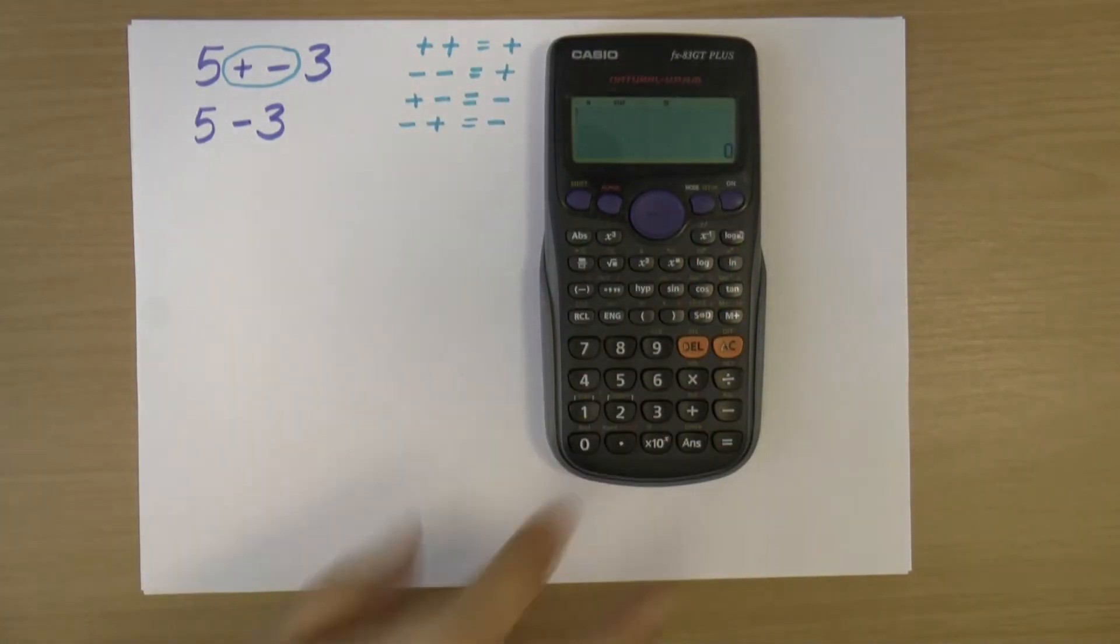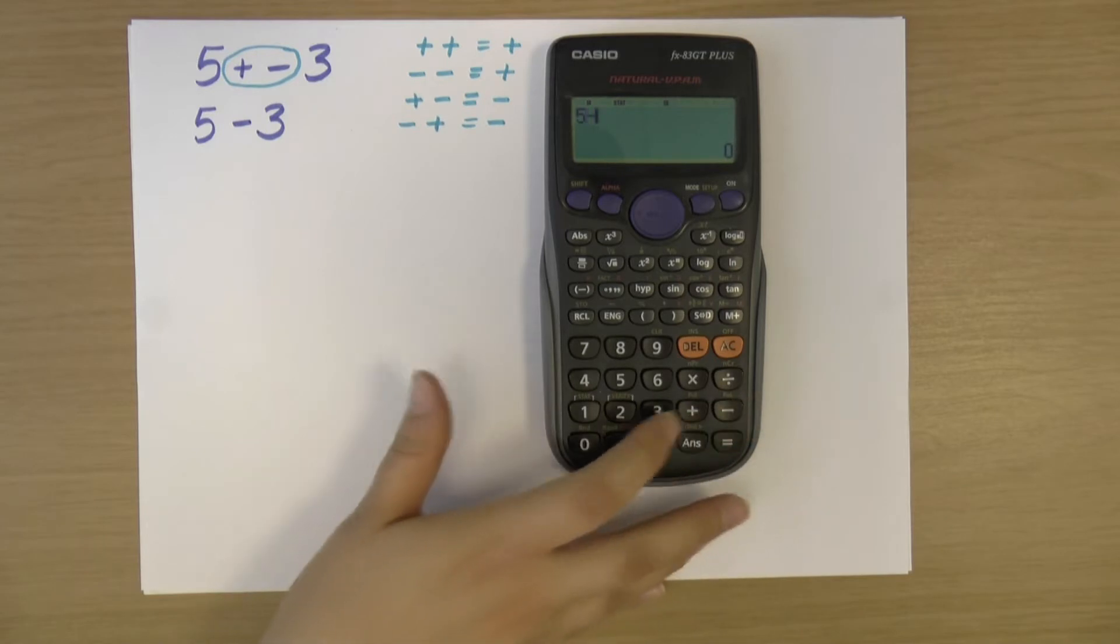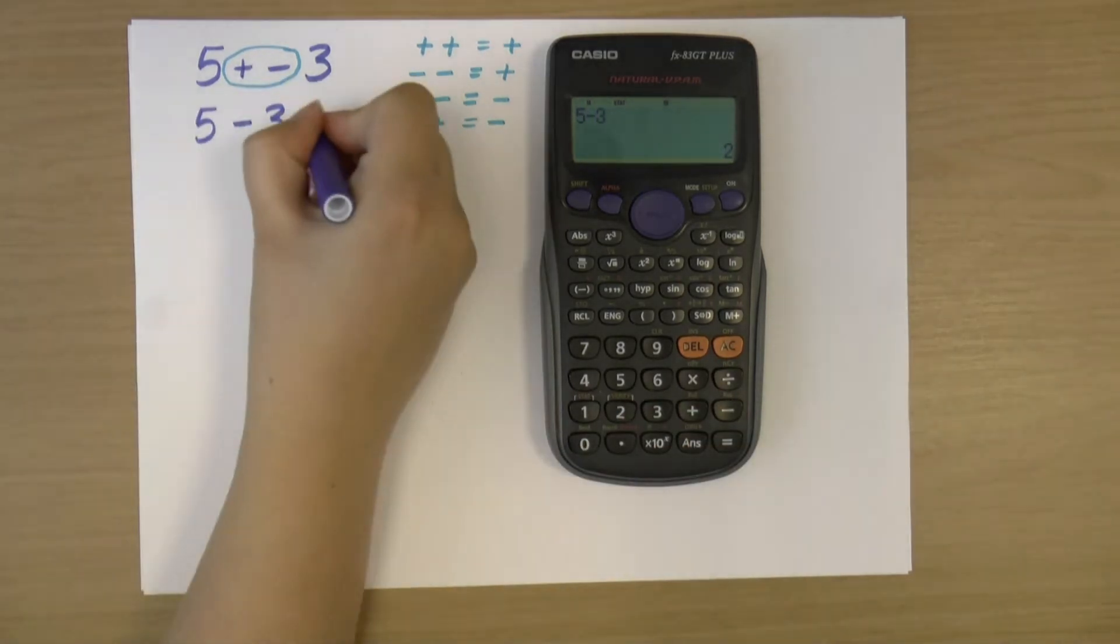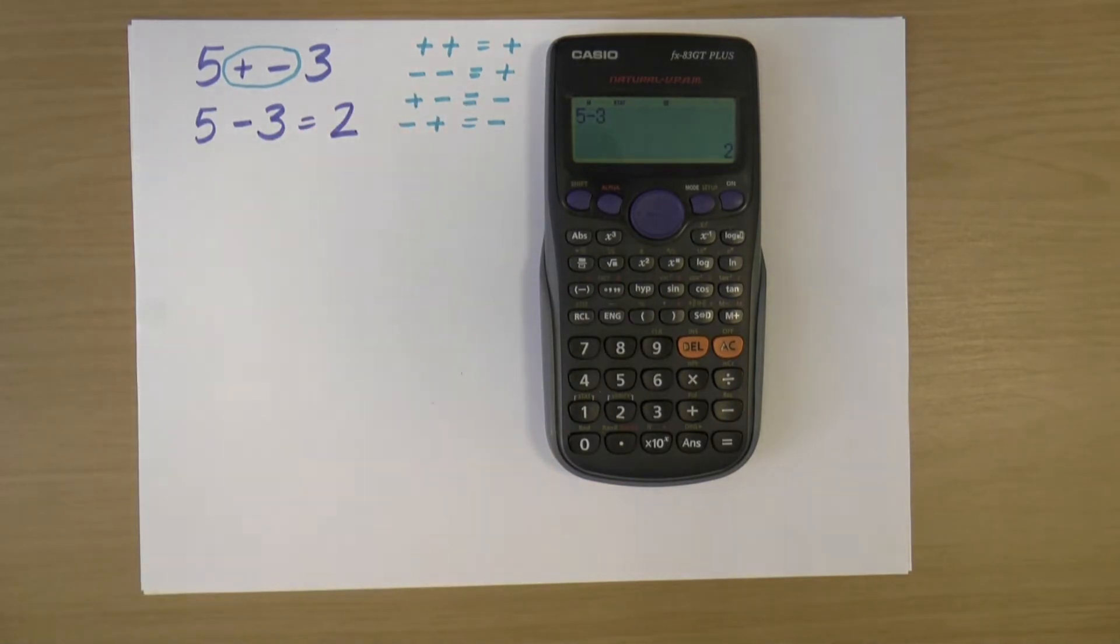And to solve that I can either do it in my head or I've got a calculator here. So if I do 5 minus 3, that gives me my answer of 2.